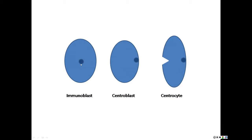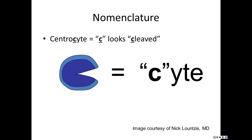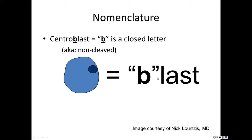An immunoblast has the nucleolus in the center; a centroblast has the nucleolus at the side. The difference between a centrocyte and a centroblast is that the centrocyte has a cleaved nucleus. To help you remember: the C in cyte is cleaved, whereas the B in blast is round — non-cleaved. It kind of just helps you remember the terminology.